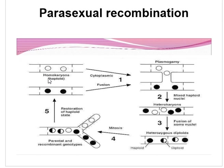Some of these haploid strains are generally genotypically different from their parents because of mitotic recombination. This is the complete overview of parasexual recombination. After the parasexual cycle has operated for some time, the mycelium may contain: haploid nuclei like both parents, haploid nuclei with various new genetic recombinations, several types of homozygous diploid nuclei, and several types of heterozygous diploid nuclei.